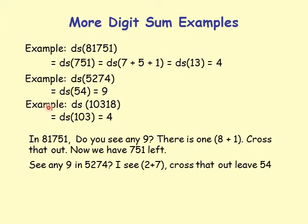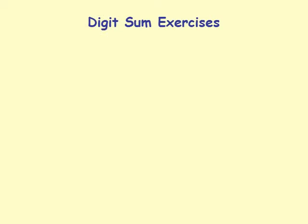Another example: digit sum of 10318. Any 9s? Yes, 1 plus 8 equals 9, cross those out. Remaining digits are 1, 0, 3. Digit sum of 1 plus 0 plus 3 equals 4.